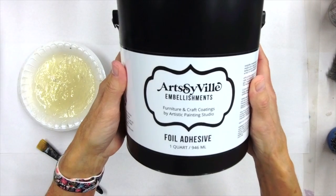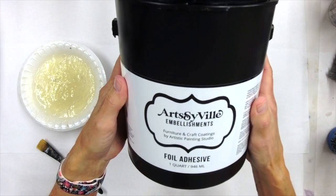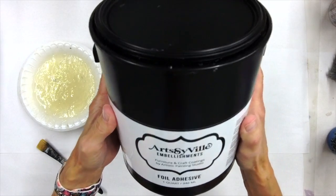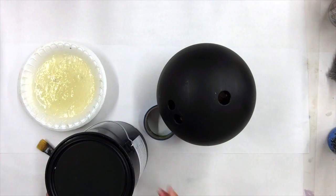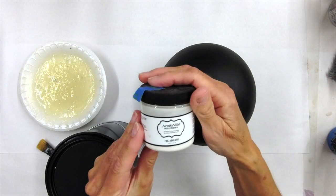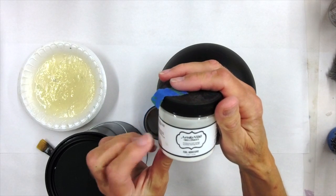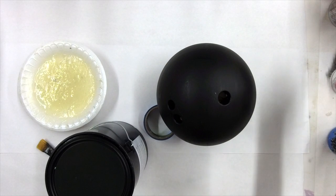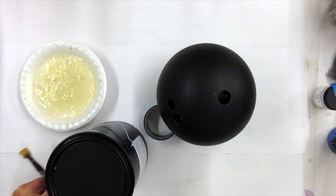This is our Artsyville Embellishments foil adhesive. I am working out of a gallon. Please don't let that scare you as we do have a lot smaller containers. We have four ounce, 10 ounce quarts, and gallons, depending on the size of your project.